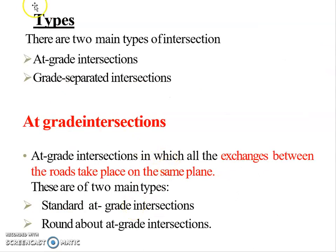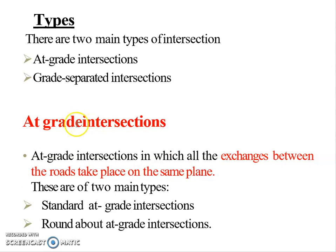Next are the types of intersections. There are mainly two types of intersections. The first type is at-grade intersections, and the second type is grade-separated intersections. In at-grade intersections, roads join or cross at the same plane and terrain, so vehicles have to change direction on the same level.